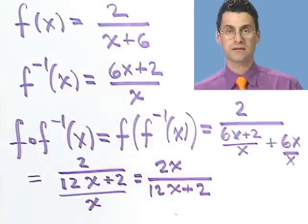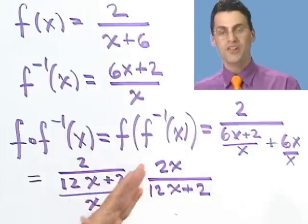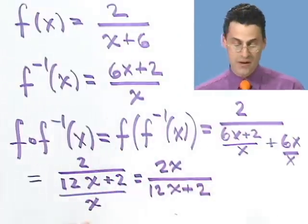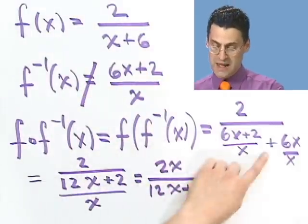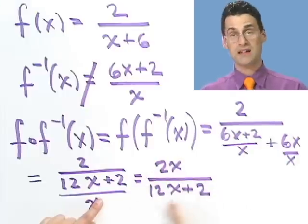So I have that. And then if I now invert and multiply, I see 2x divided by 12x plus 2. Does that equal x? No, it equals 2x divided by 12x plus 2. So in fact, this is not the inverse function. This is not the inverse function. So I was able to check that by working this out and seeing that, in fact, I'm not getting just x alone.